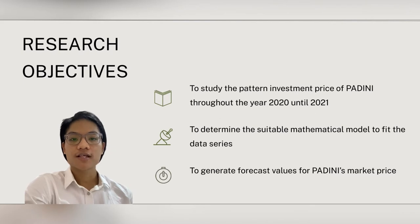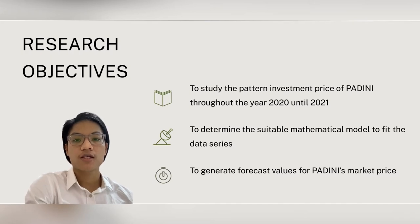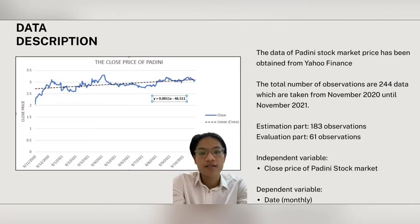Research objective: to study the Padini investment price throughout the year 2020 until 2021, and to determine the most suitable model to fit the data series and generate forecast values for Padini's market price. We move on to data description. As you can see, there is a graph from the data of Padini's stock market price which is obtained from Yahoo Finance. The total number of observations are 244 data which are taken from November 2020 until November 2021. The estimation part has 183 observations while evaluation part has 61 observations.